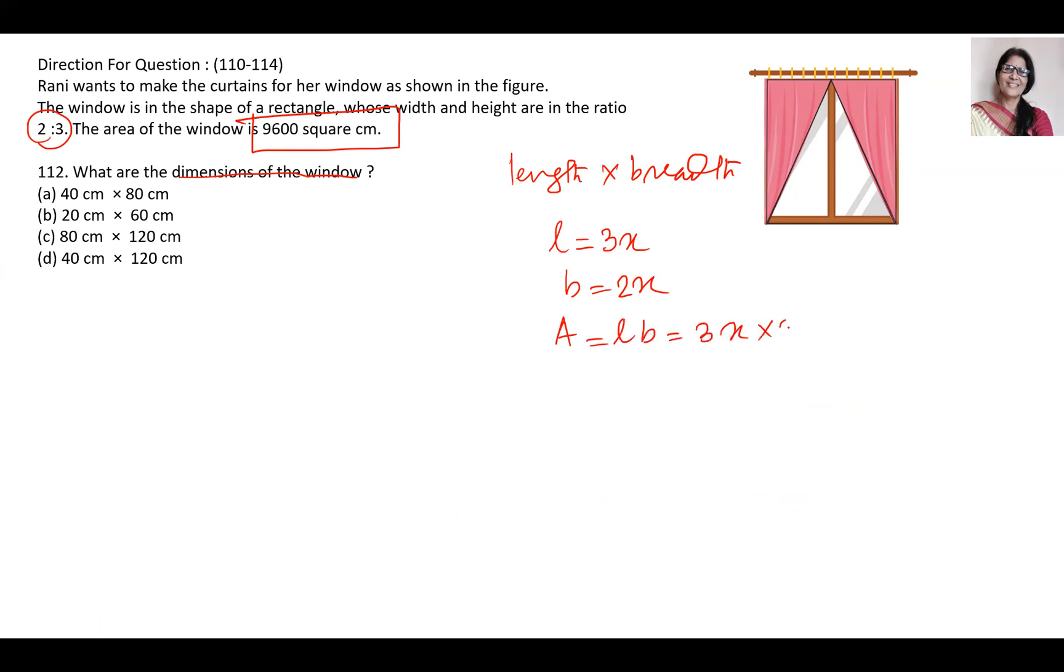That will be 3x multiplied by 2x equals 9600 square centimeters. So 6x squared equals 9600. x squared equals 1600. So x equals square root of 1600. That will be 40.